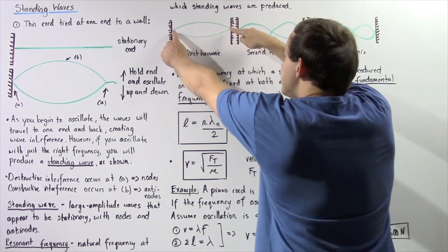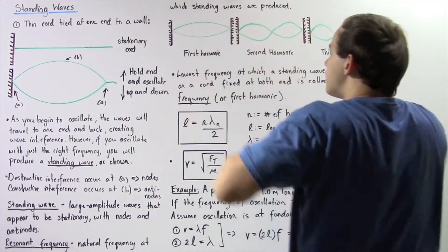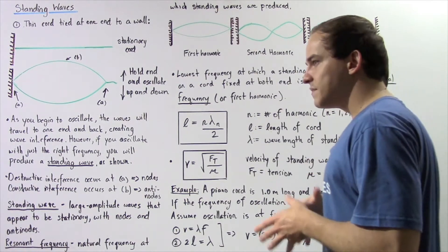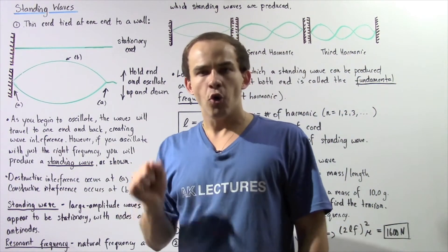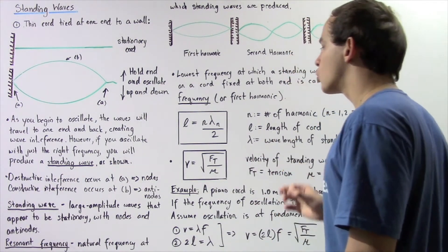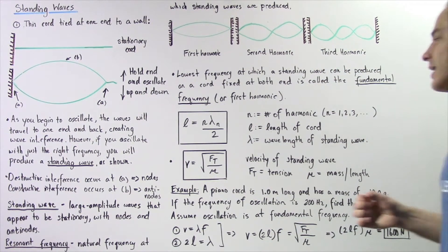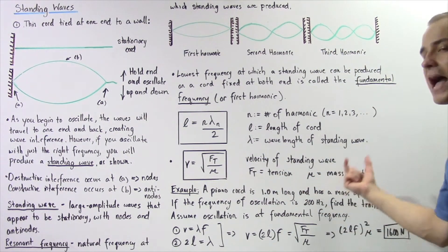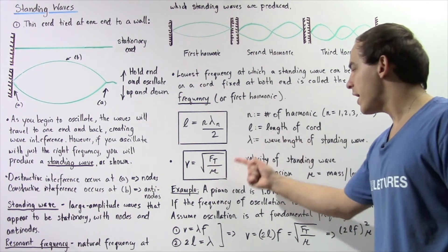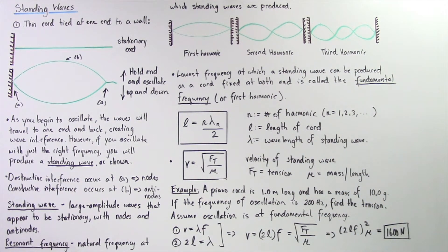Recall that the velocity of a mechanical wave traveling in a thin cord is given by: v = √(F_T / μ), where F_T is the tension force in the cord and μ is the linear mass density, equal to the mass of the cord divided by its length. This equation gives us the velocity of our particular standing wave.